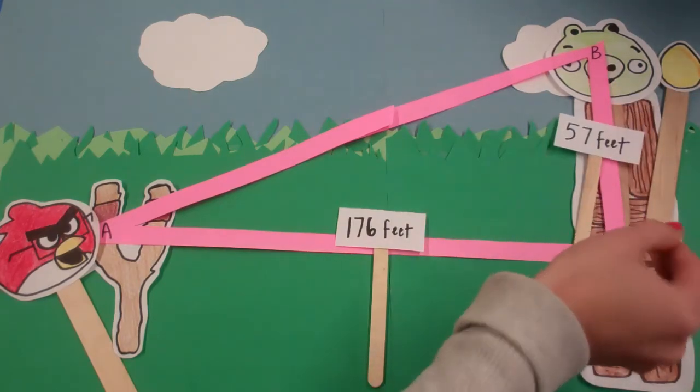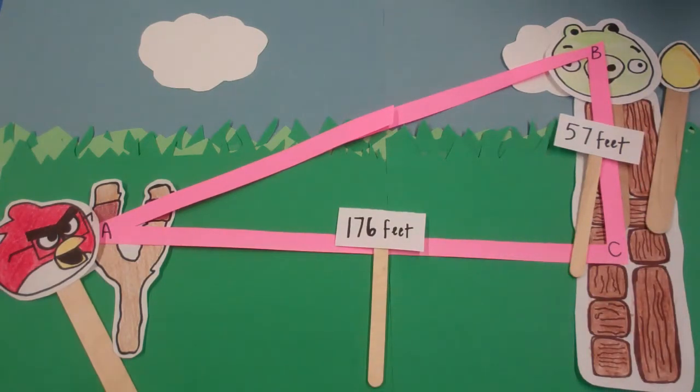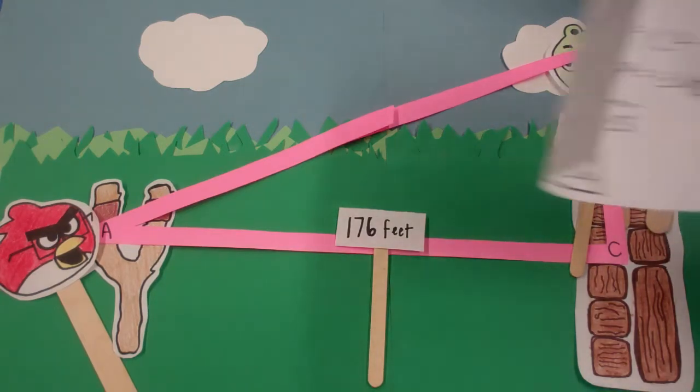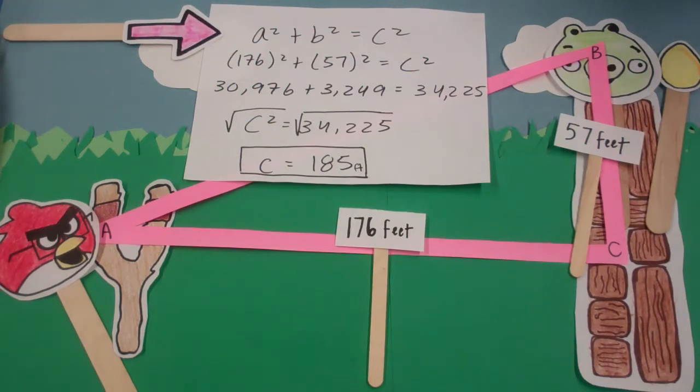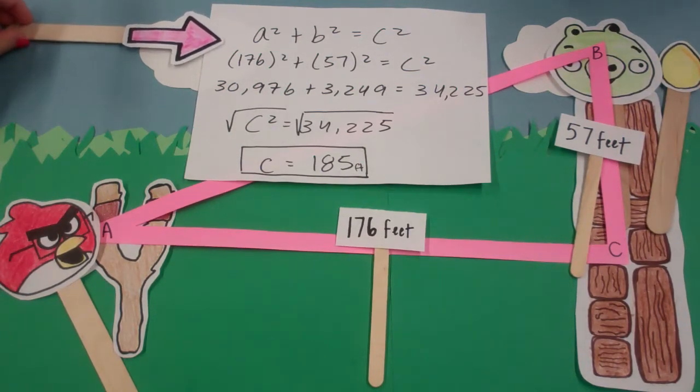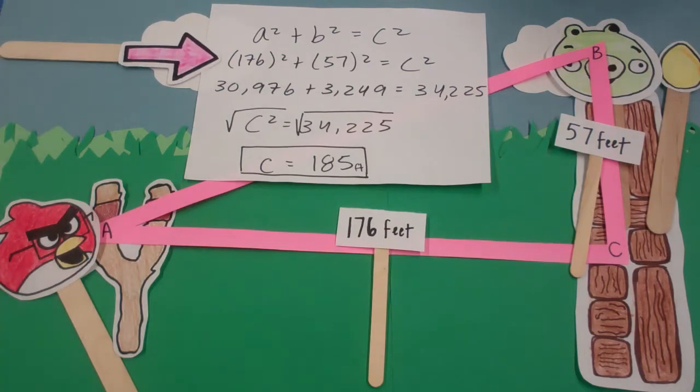He decides to use Pythagorean Theorem to solve for the distance he has to travel to hit the pig off of his tower. The Pythagorean Theorem states that a squared plus b squared is equal to c squared. The distance between the slingshot and the tower, 176 feet, represents side b, and the difference in height between the slingshot and the tower, 57 feet, represents side a.